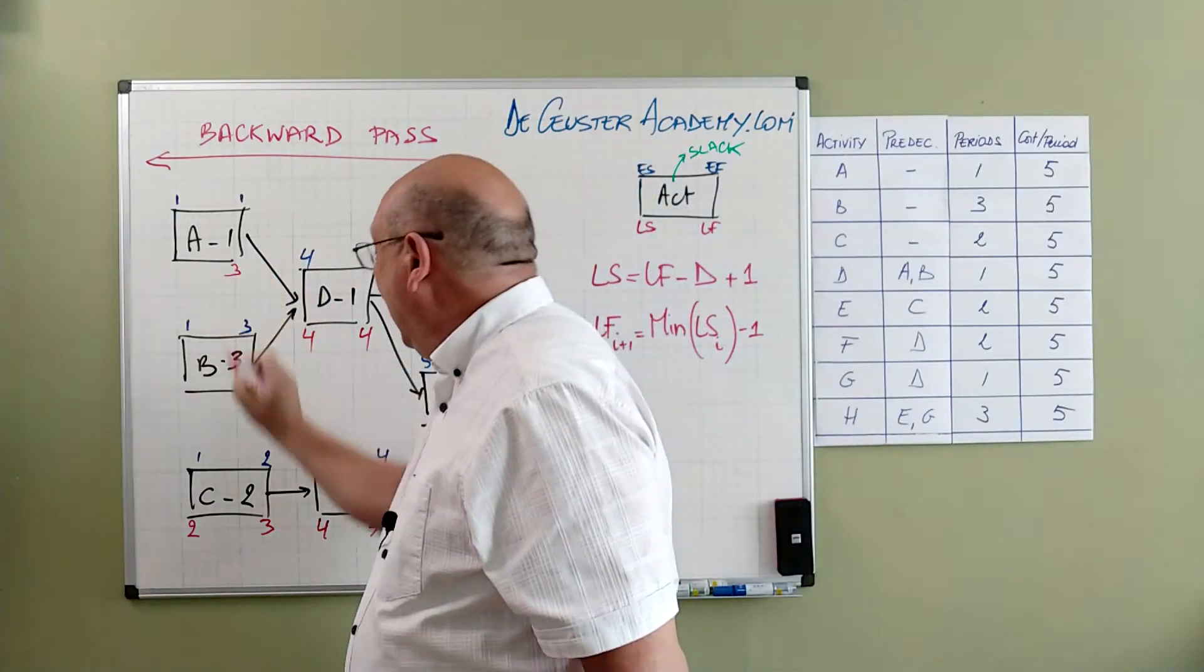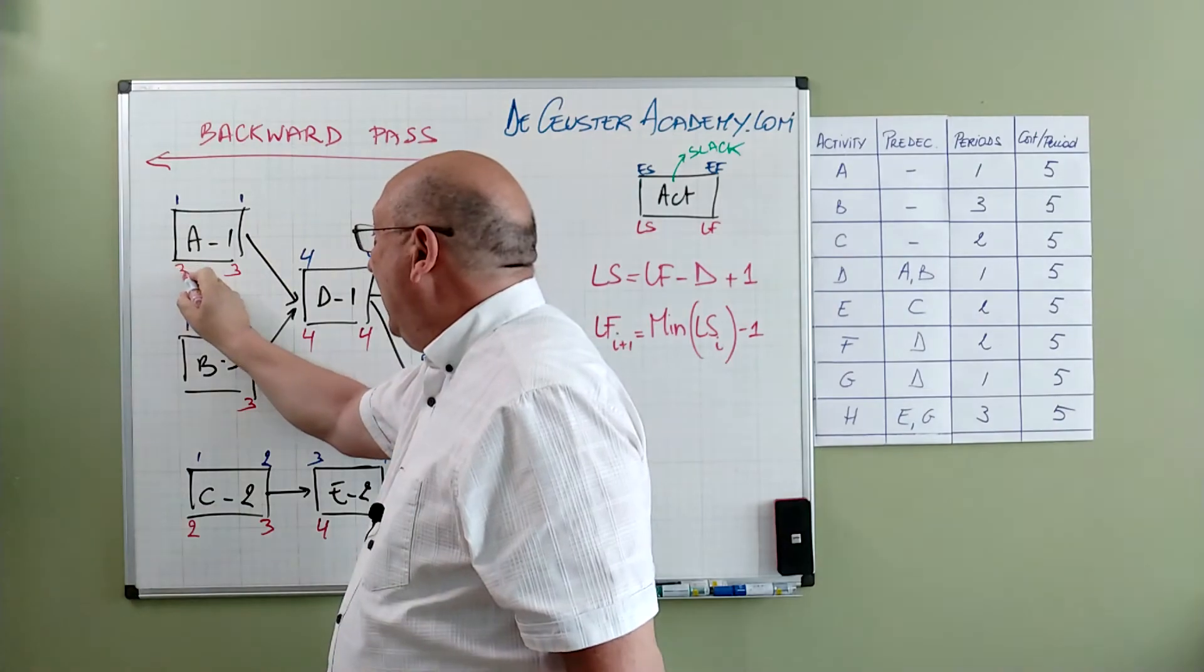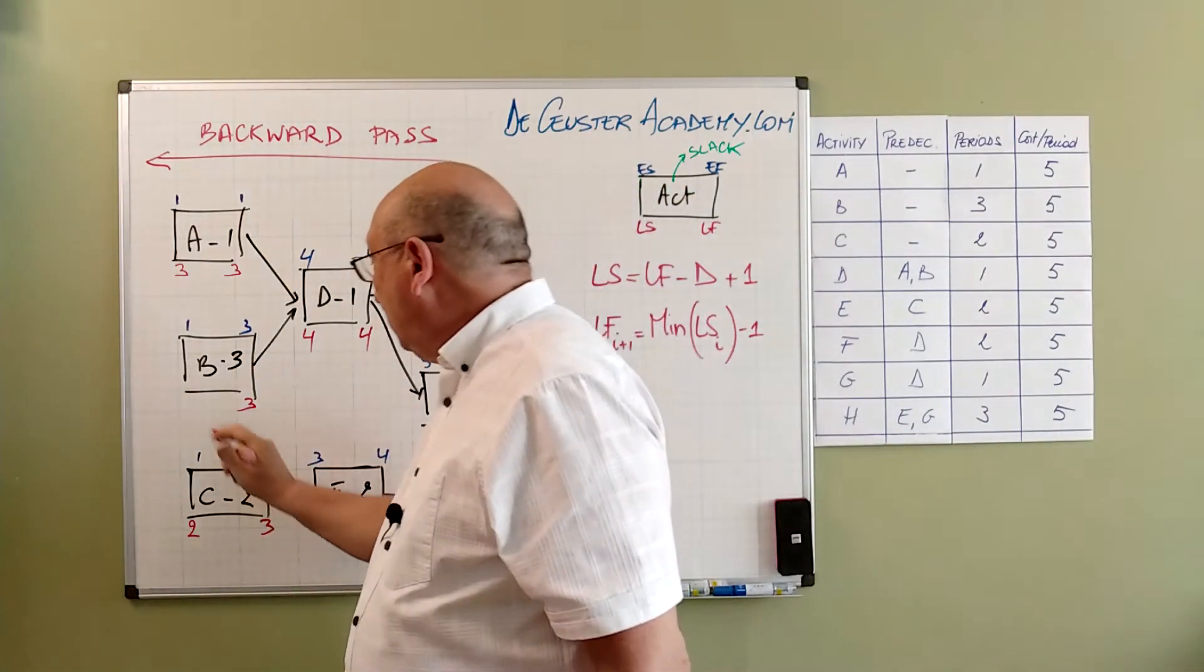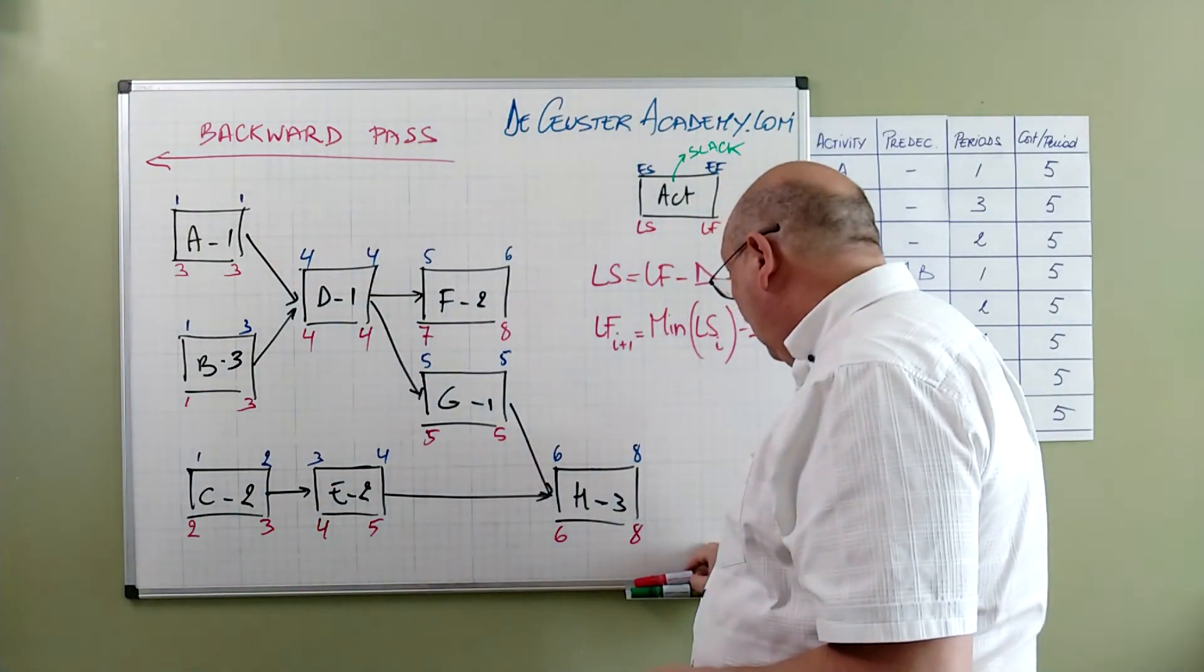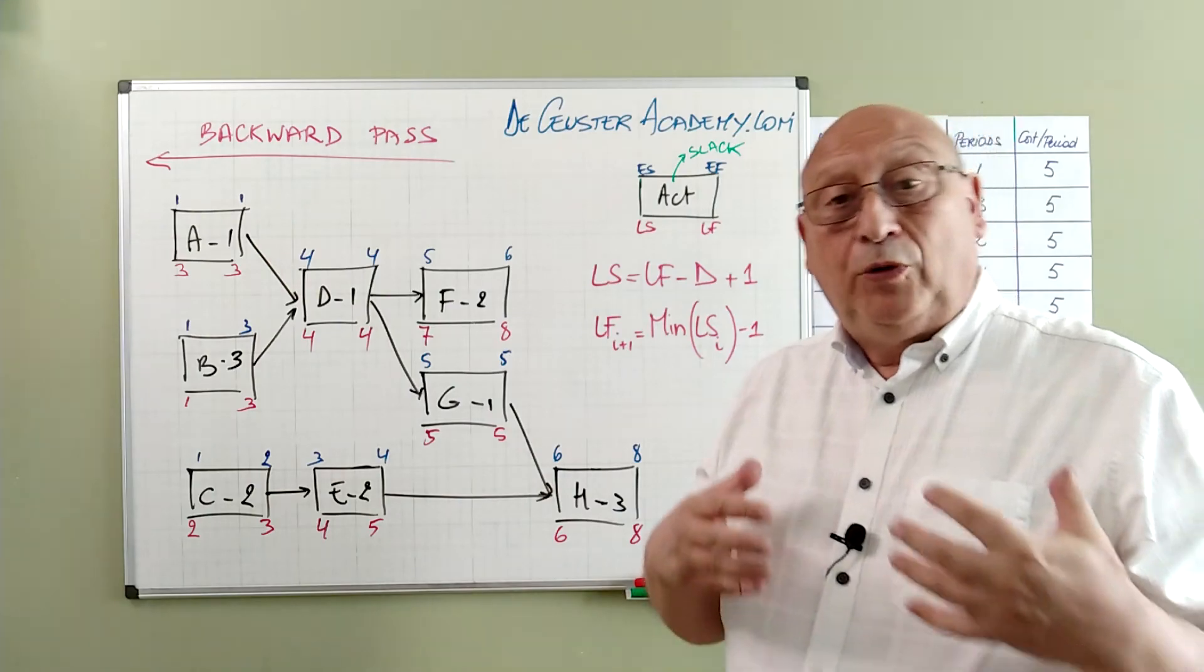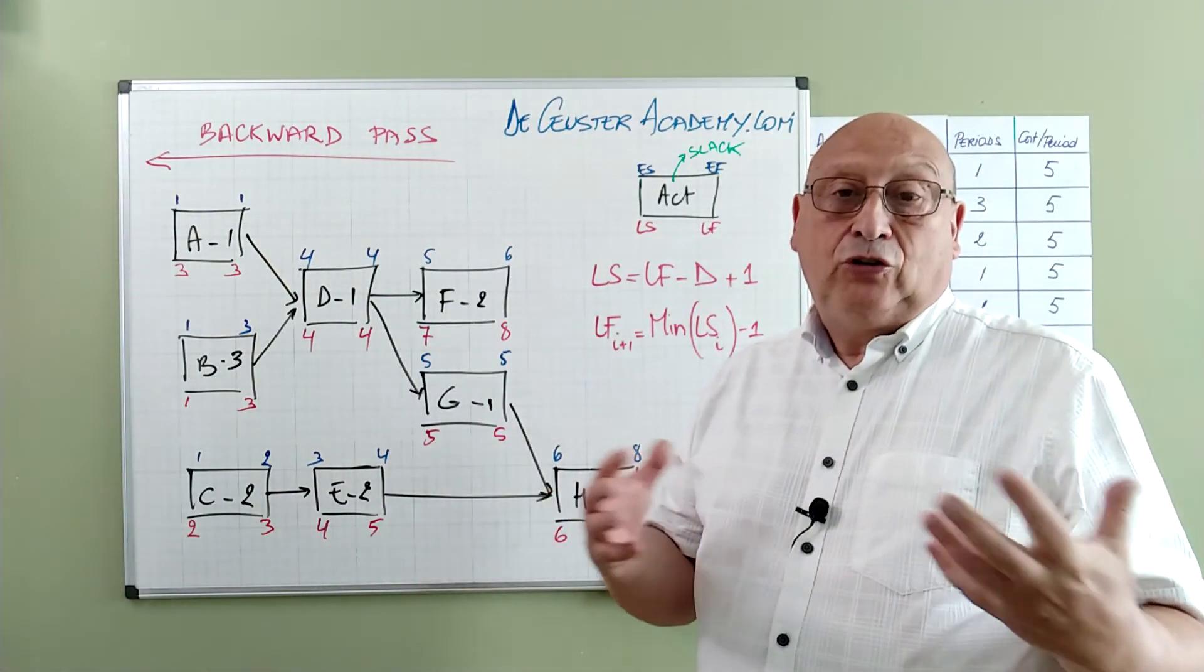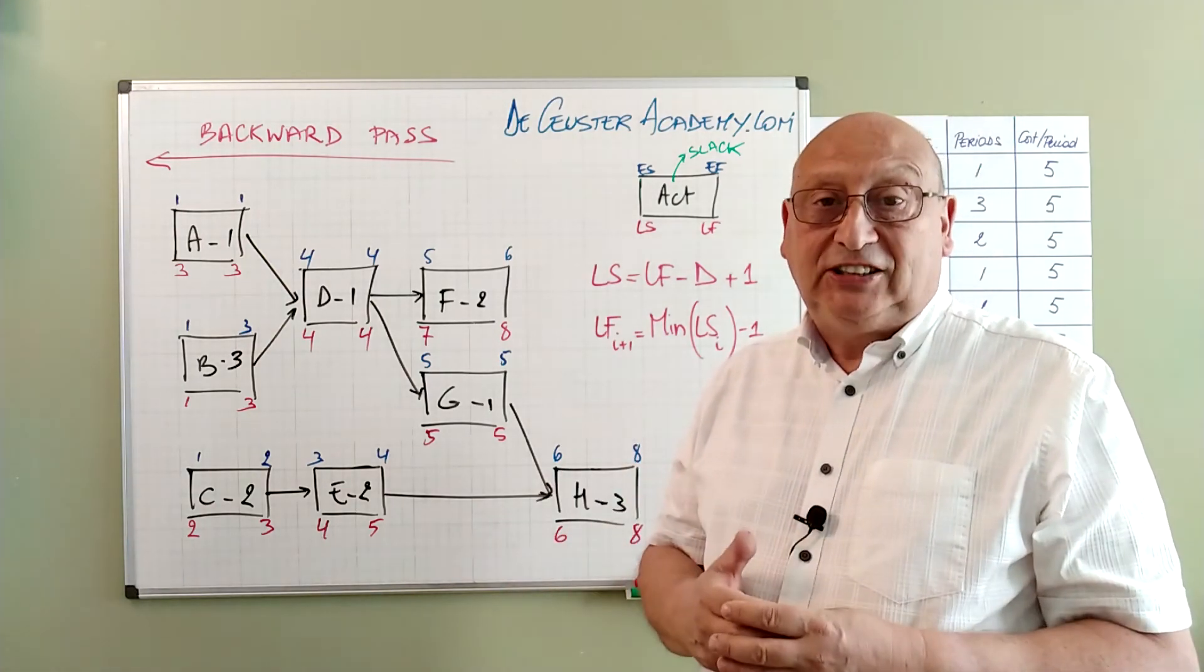So we have 3 and 3 here. And then we find 3 for A. 3 minus 1 plus 1 is 3. 3 minus 3 plus 1 is 1. So basically this is the final result of the backward pass. We finished the forward pass. We finished the backward pass. So basically we finished this part of the exercise.